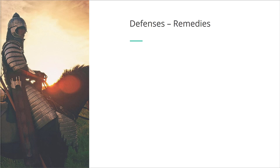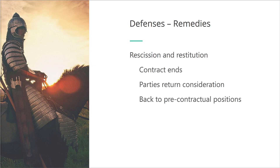Generally speaking, there are two basic options for remedies. The first one is rescission and restitution. Rescission means that the contract is ended. Restitution means that the parties return the consideration to one another. The result is that the parties are returned to their pre-contractual positions. This also entails the right of a party to ask for damages, mostly in the form of compensation for costs incurred because of the existence of the contract. However, because the goal is to return the parties to the position they were in had they not entered into the contract, it is not permissible to claim lost profits.